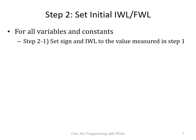The next step is to set the initial IWL and FWL. First, set the sign bit and IWL to the value measured in step one. If the variable stays in the positive region, you don't need to assign the sign bit. But if the variable goes from a positive to a negative value, you need to assign the sign bit. For the IWL, take a look at the absolute maximum number and set accordingly.